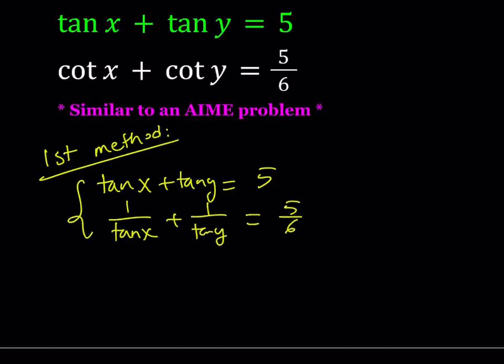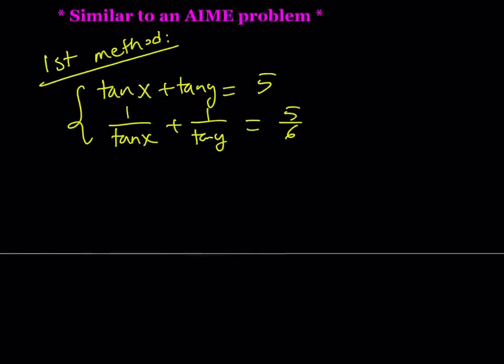Now, this is a system. You can set tan x = a, tan y = b, and you're just going to get a system from here. So if you do that, you're going to get a + b = 5, and 1/a + 1/b = 5/6. Go ahead and simplify the second one. By making a common denominator, we get (b + a)/(ab) = 5/6.